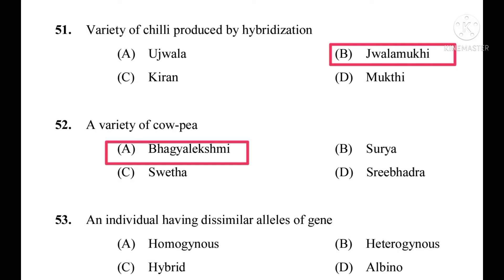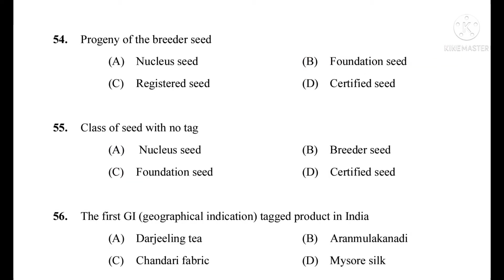Question number 53: An individual having dissimilar alleles of a gene. The correct answer is hybrid. Question number 54: Progeny of the breeder seed. The correct answer is foundation seed.